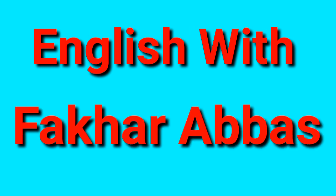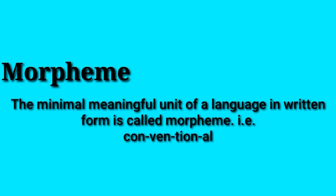What is morpheme? The minimal meaningful unit of a language in written form is called morpheme. Any meaningful unit in written form is called morpheme. For example, a word like 'conventional' — its mature morpheme.